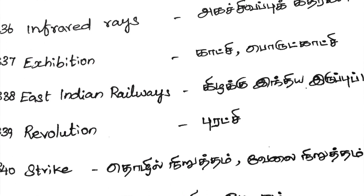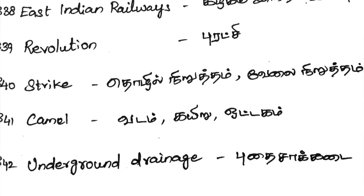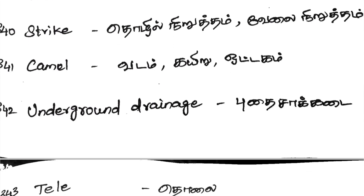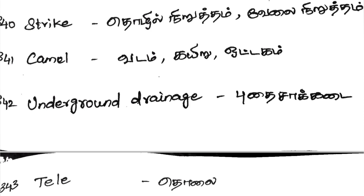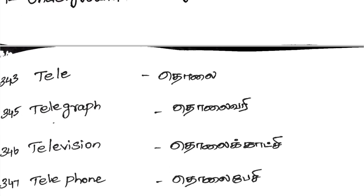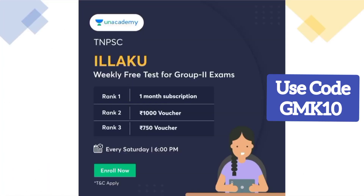East India and Railways. Revolution Strike. Camel, Vodam, Kairu, Wattaham, Underground, Tri-Nage, Pudai Sakadai, Tele Tolai — Telegraph Tolai. Television Tolai Kaachi — Telegraph.